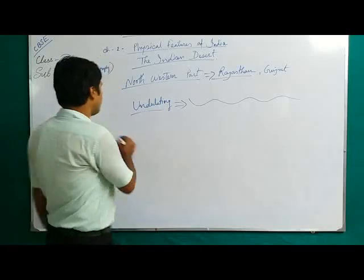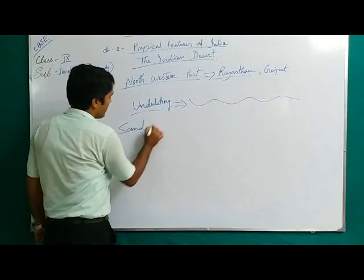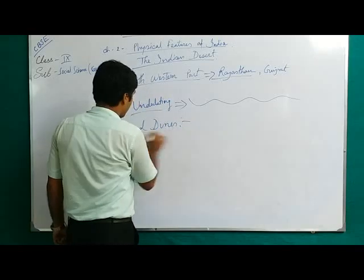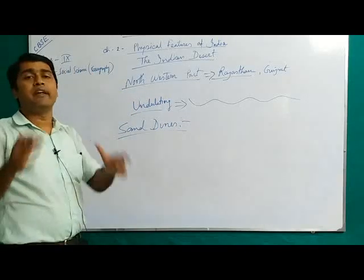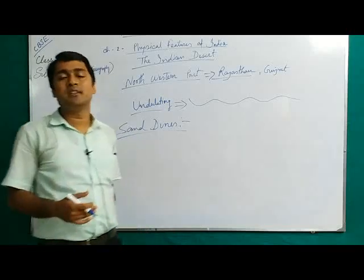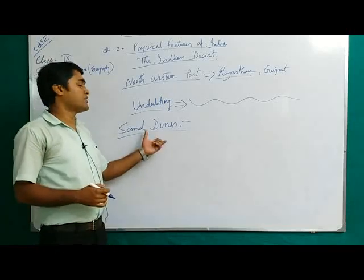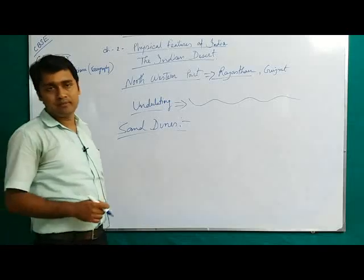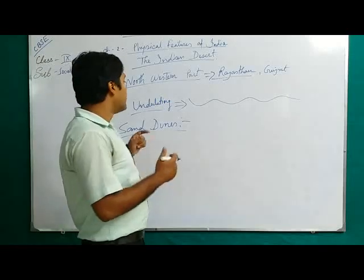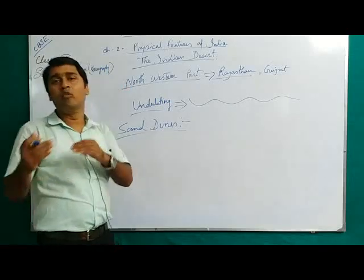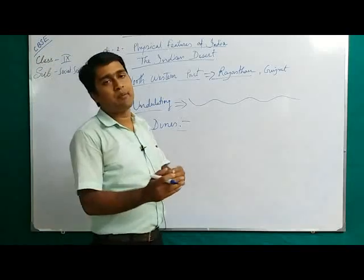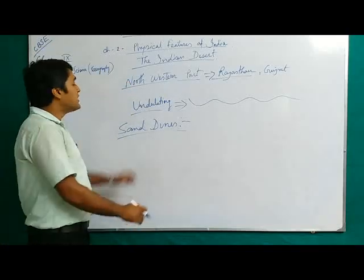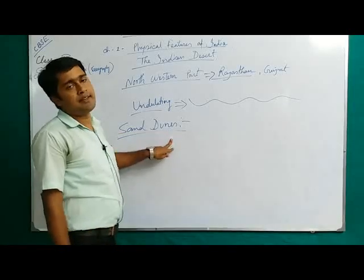Sand dunes are heaps of sand found in the desert region. They are formed generally by blowing wind, and these sand dunes can shift or move from one place to another by the force of wind. Undulating topography and sand dunes are very common features in the desert region.